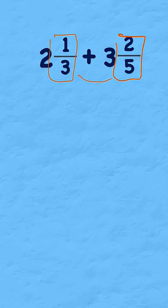Well, I can just multiply my 3 times my 5, which gives me 15. So my new equivalent fractions would look like 2 and something-fifteenths added to 3 and something-fifteenths.